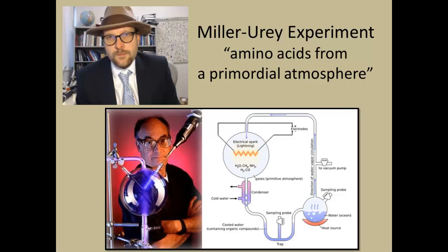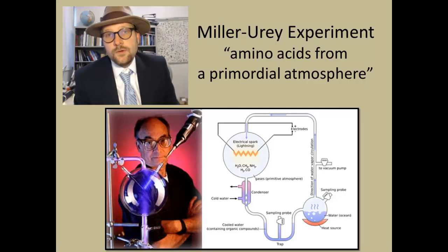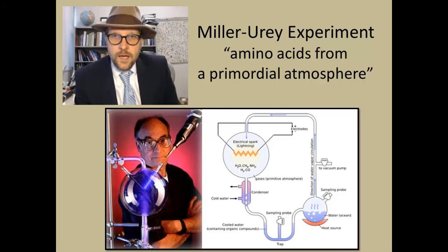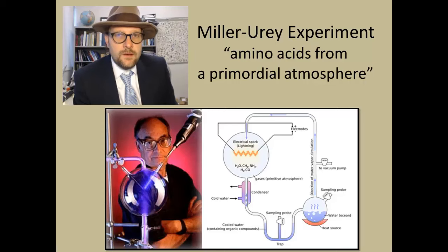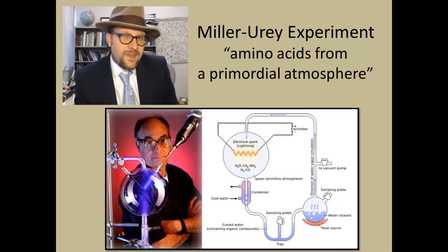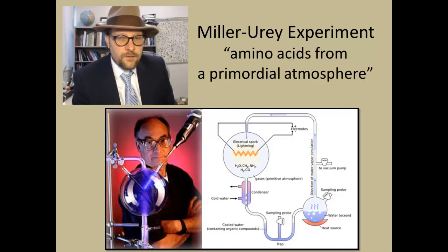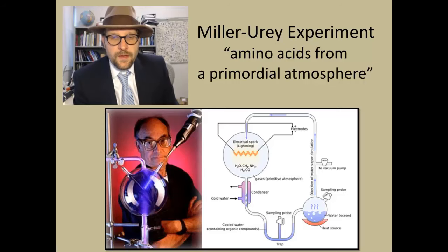The origin of life as a topic needs to start with the Stanley Miller experiment. Stanley Miller was a graduate student working with Harold Urey, who won a Nobel Prize in Chemistry. Miller was a student at the University of Chicago, interested in ways to abiotically — without life — create the ingredients for life. He took what was then known as the probable early planetary atmosphere: no oxygen, but composed of hydrogen, water, methane, ammonia, and carbon monoxide, and put that into a flask.